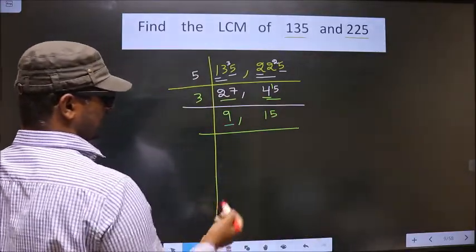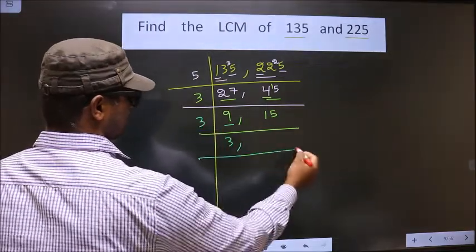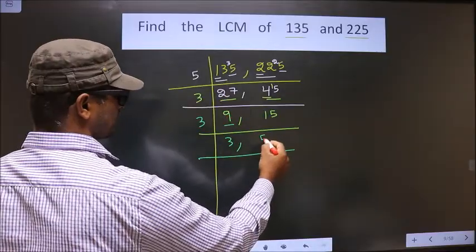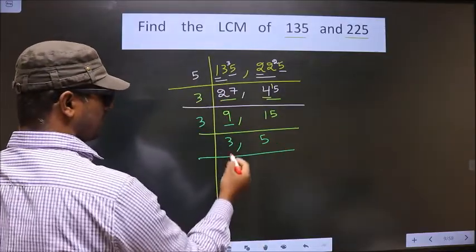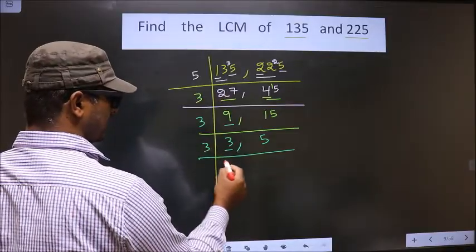Now, here we have 9. 9 is nothing but 3 threes. See, 15 is also divisible by 3. So, 3 times 5 is 15. Now, here we have 3. 3 is a prime number. So you take 3 and 1.